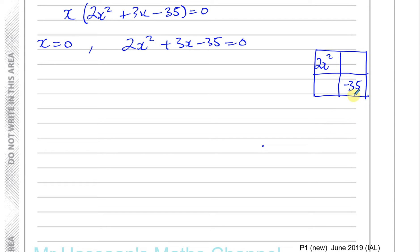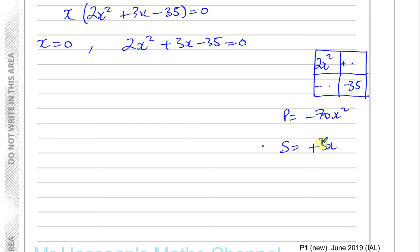These two diagonal numbers multiplied must equal the same as the other diagonal pair. So I'm looking for two terms with a product of negative 70x squared and a sum equal to the middle term plus 3x. One is positive and one negative. I can see that 10x and minus 7x work: they multiply to give minus 70x squared and add to give plus 3x. So it must be minus 7x and plus 10x.